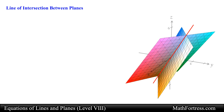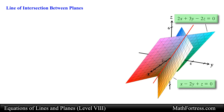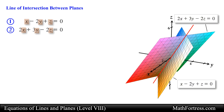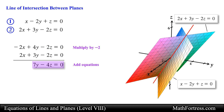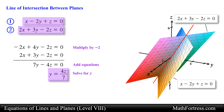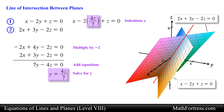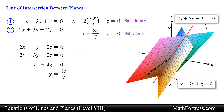For example, say we wanted to find the line of intersection between the following two planes. We would first want to eliminate one of the variables — in this case let's eliminate the variable x by multiplying the first equation by negative 2 and adding both equations. From here we go ahead and solve for y. We then use this expression for y and substitute it into one of the original equations. Let's substitute it into the first equation. From here let's solve for the variable x.